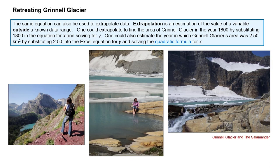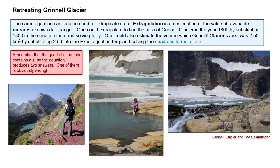What we're just talking about — using the quadratic formula to figure out what will happen in the future — that's not called interpolating data. Interpolating data is when you figure out the value of a missing data point within your range. Extrapolating data means estimating outside of the known range and predicting into the future, or figuring out what may have happened way in the past before you started collecting data. You can use extrapolation to figure out what happened outside of your data range, or interpolation to determine what happened inside your data range. Remember, when you're doing this calculation, you will get two answers because the quadratic formula contains a plus and a minus, and one of them will be obviously wrong — that's the one you reject.